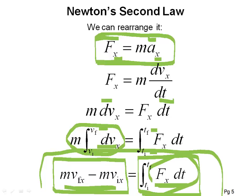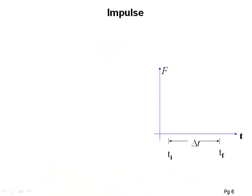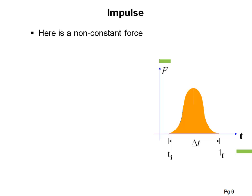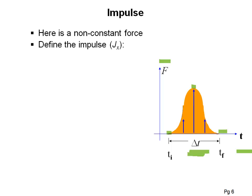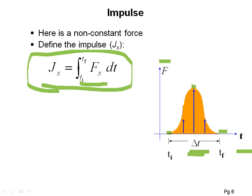To look at the impulse a little better, it's nice to look at a graph — a plot of force versus time. Here's the actual plot for a non-constant force. You can see that it starts close to zero at the beginning, peaks at some point, and comes back down to zero again over some time delta t. We define the impulse J_x as the integral of F dt — that is, the area under the force versus time curve.